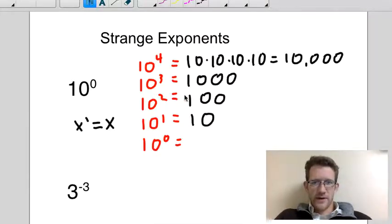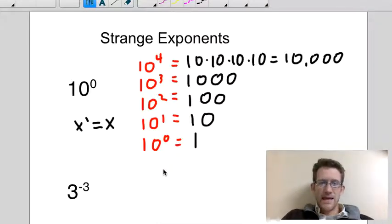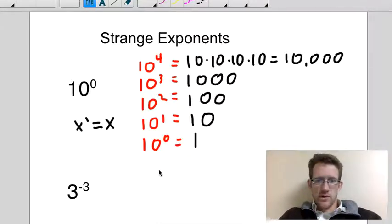Okay, and then finally, we have 10,000, we have 1000, we have 100, we have 10. Continuing the pattern now, that means we're just shaving off a zero each time when we get down to one. So 10 to the zeroth power is 1.